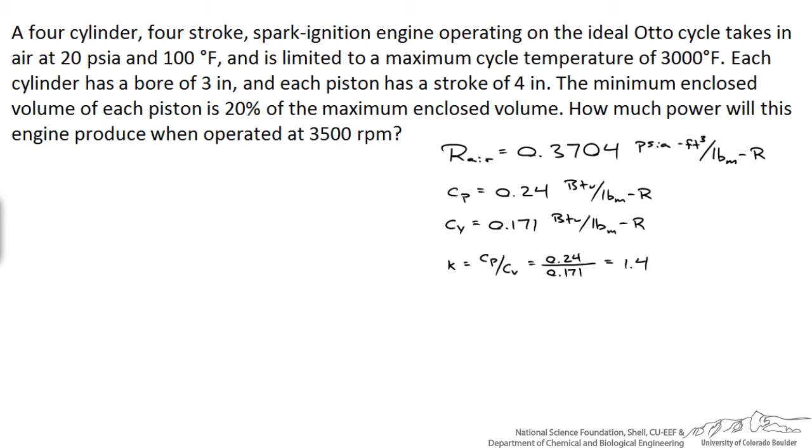Each cylinder has a bore of three inches and a stroke of four inches, and the minimum enclosed volume of each piston is only 20 percent of the maximum enclosed volume. And the question is, how much power will this engine produce when it's operated at 3500 RPM, which is pretty typical for cruising down the highway at a fast speed.